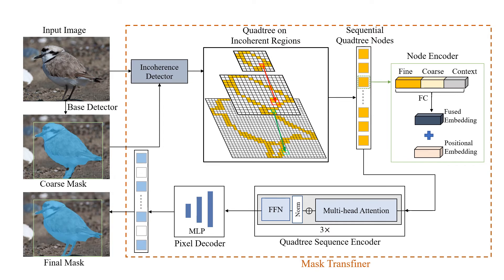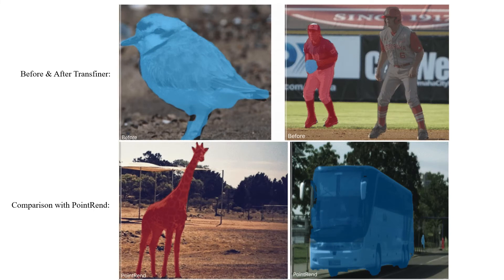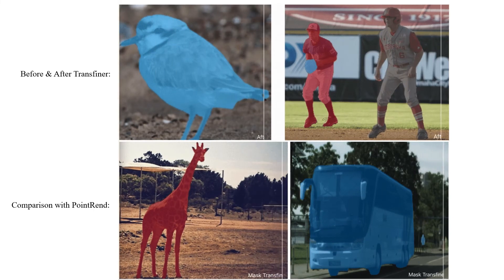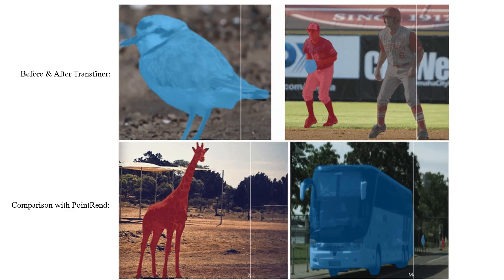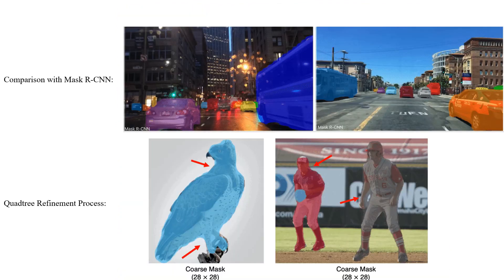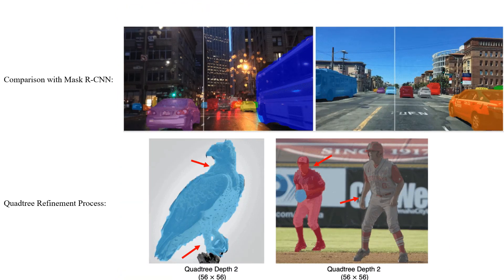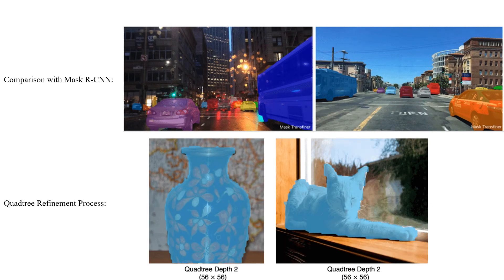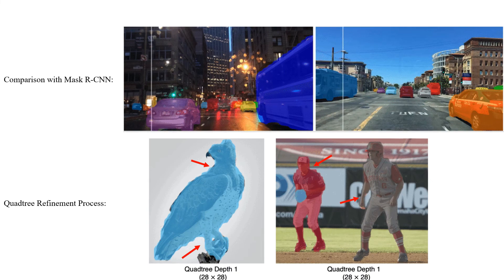Transfiner produces significantly more detailed results at high-frequency image regions, such as the bird's feet. The object masks output by Mask Transfiner are much more fine-grained and accurate, even compared to the previous state-of-the-art method PointRend. We also show the quadtree refinement process using output results from different levels, where deeper levels produce more detailed mask output.